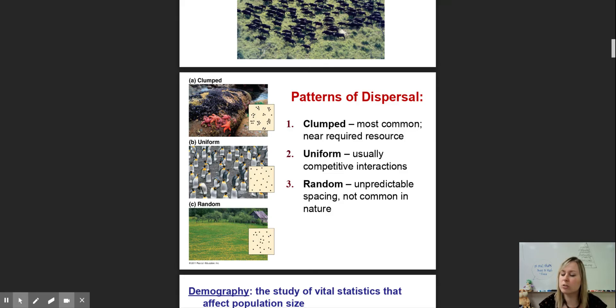Random patterns are usually not that common in nature. Resources usually drive dispersal patterns. Random distribution may happen when a population is new, but as soon as the resources are divided and they establish their niches, you start to see more uniform or clumped patterns. If you look at these wildflowers in the picture, they may look like this for one season, but eventually they will be more uniformly dispersed.